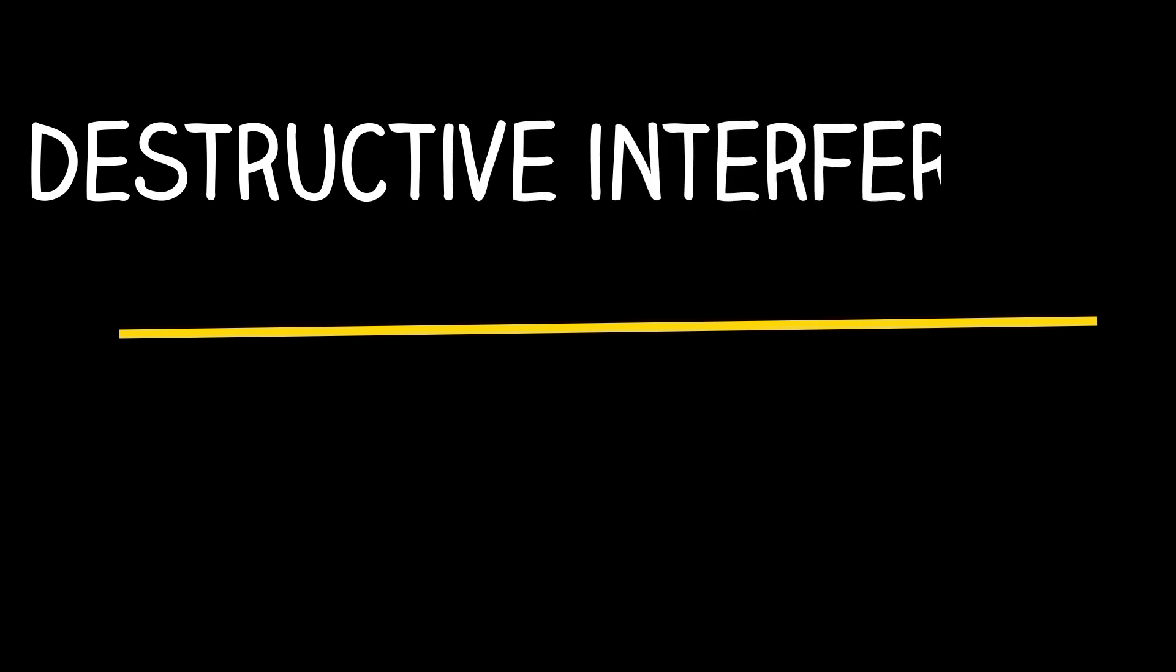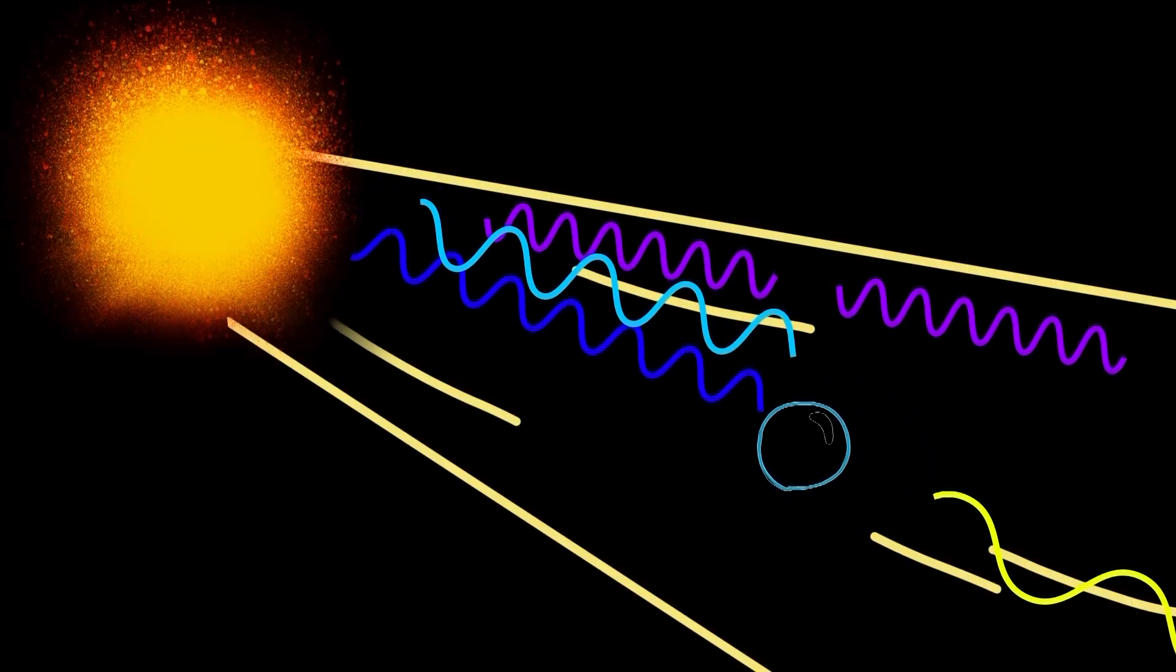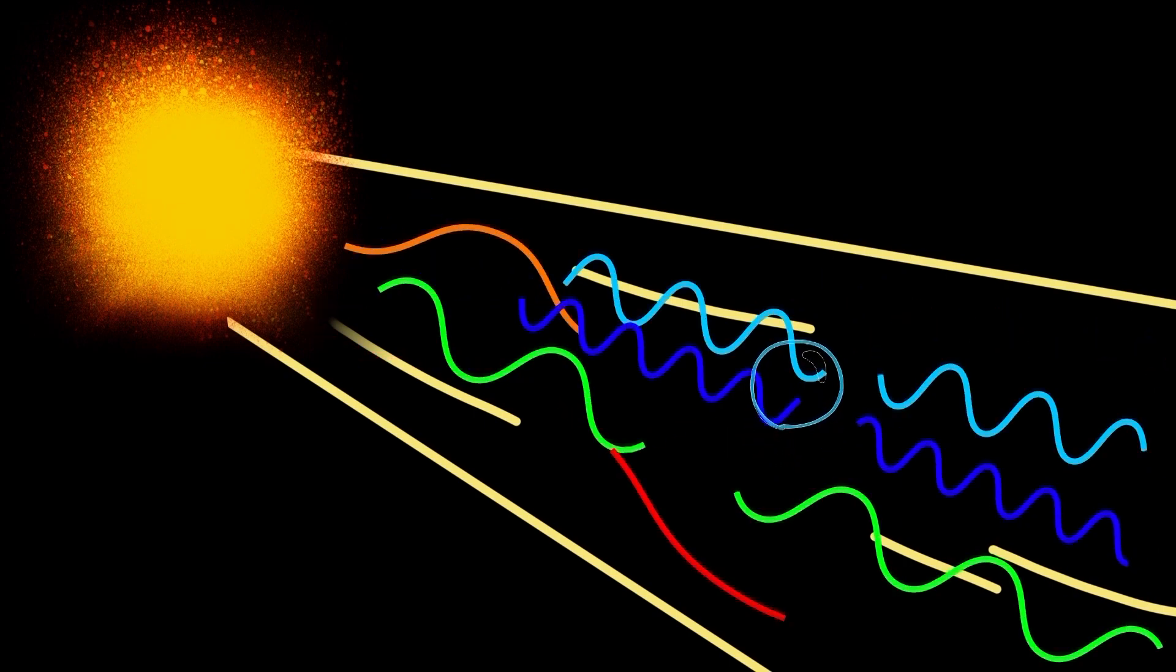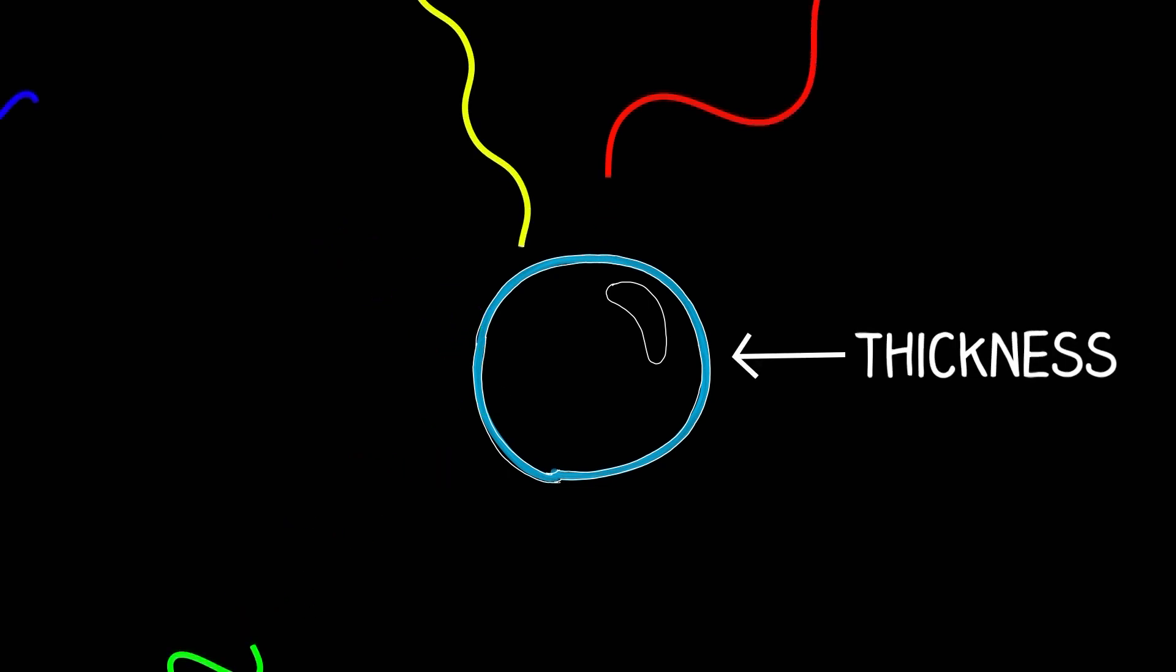White light is made up of all the colors of the rainbow, and different colors correspond to different wavelengths. Which wavelengths amplify and cancel out depends on the thickness of the water layer.